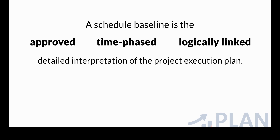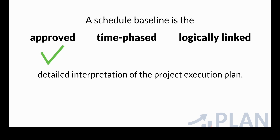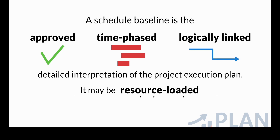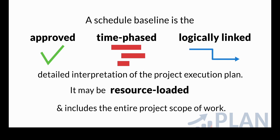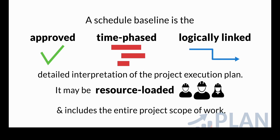The baseline schedule must be approved by the client, the contractor, and other stakeholders. The work must be time-phased — the work execution plan must be laid down with reference to dates, a calendar, and working hours, deriving the project start and end dates by logically linking all the work. A schedule may also be resource loaded and include the entire project scope. However, it is not mandatory to have a resource-loaded or cost-loaded baseline schedule; what is mandatory is that it includes all the work of the project.